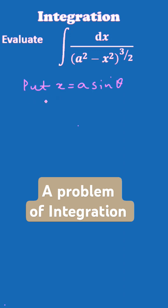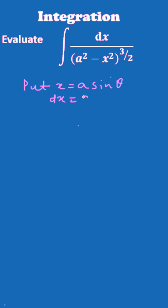If you differentiate both sides, you will get dx equal to a cos θ dθ.